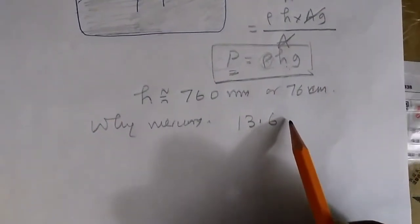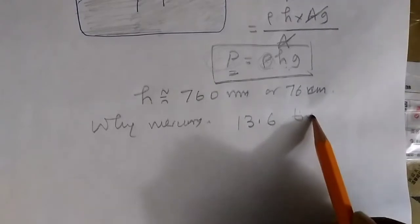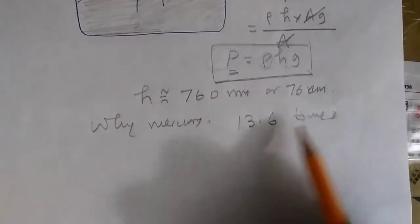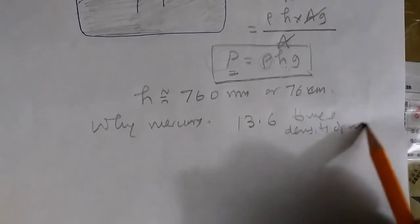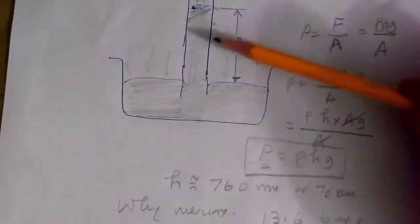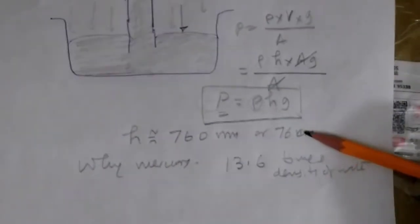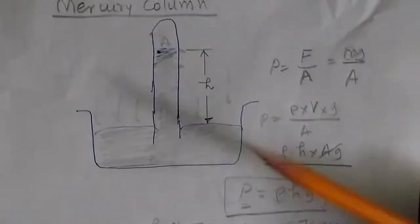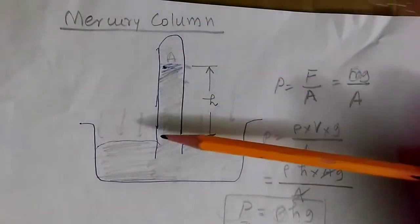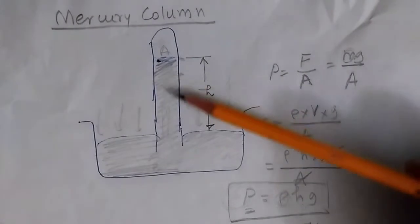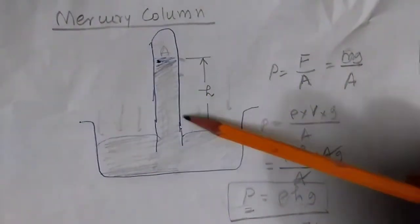Its density is 13.6 times the density of water. So if you use water, the water will have a height of 76 cm multiplied by 13 times. Obviously, it's impractical to have such a high height of the pressure column. And therefore, mercury is a good choice.